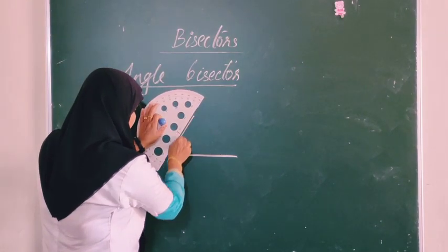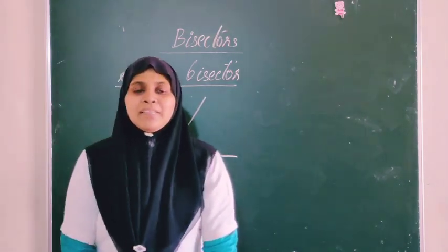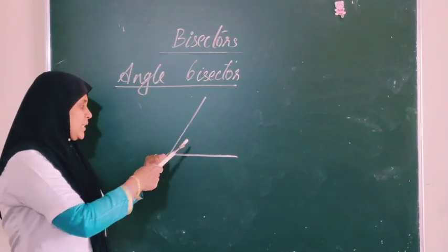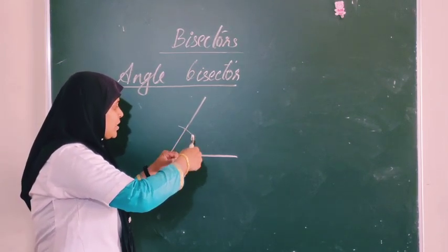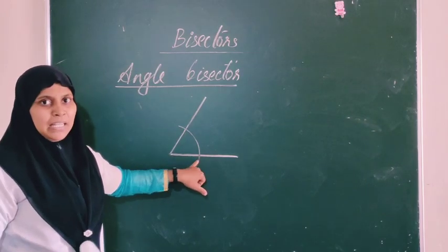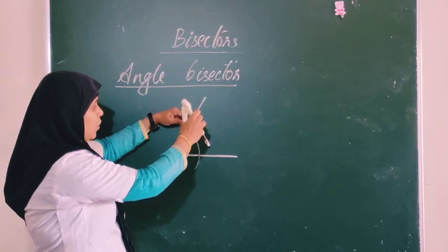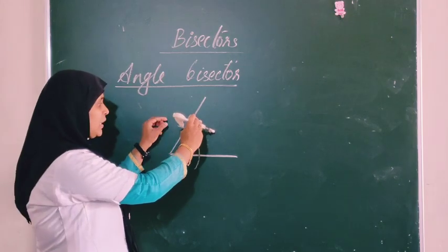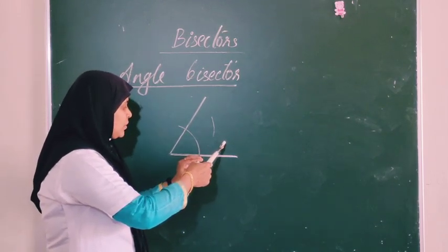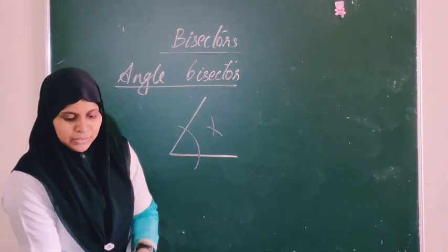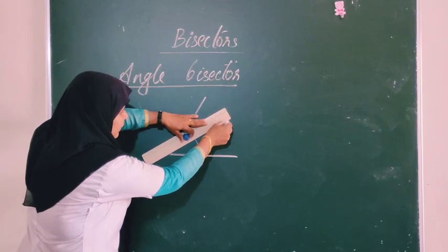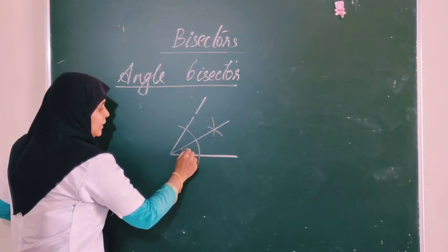Then join it. If we have an angle bisector, we place the compass at the corner of the angle and draw an arc that cuts both sides. We mark the two intersection points on the sides. In the same compass measurement, we draw arcs from those points so they cross. Then we join this corner with the crossing point, giving us 30 degrees — the bisector of the 60 degree angle.